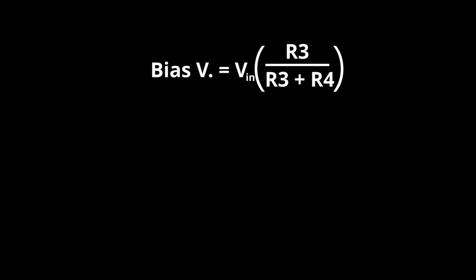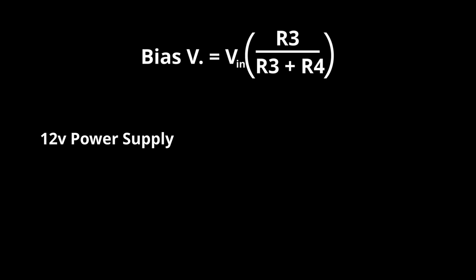In my case, I will be using a 12 volt power supply and want to add around 2.5 volts to the op amp input. 2.5 divided by 12 is 0.208. So I need R3 divided by R3 plus R4 to be roughly 0.2.